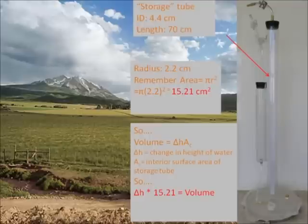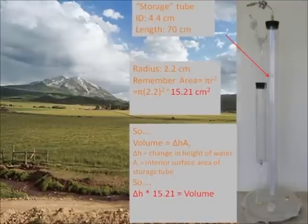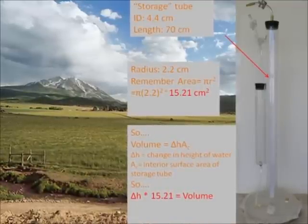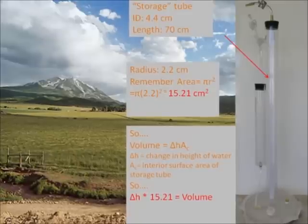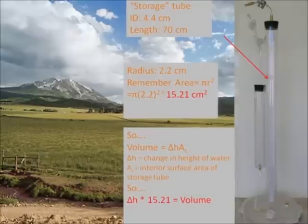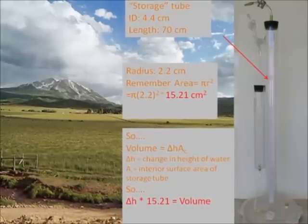The volume can be calculated as the change in height of water as noted on the storage tube, multiplied by the interior surface area of the storage tube. In this case, the surface area of the tube is 15.21 square centimeters.